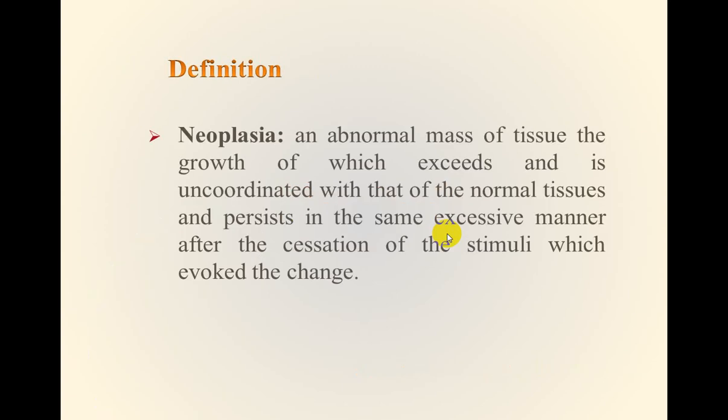Definition: what is the meaning of neoplasia? A neoplasm is an abnormal mass of tissue that grows in an exceeding manner, meaning it continues its growth beyond the requirement of normal tissue, and still does this despite growth inhibitory stimuli of the body, and still in this excessive manner of growth even after cessation of the stimuli that caused the initial proliferation.